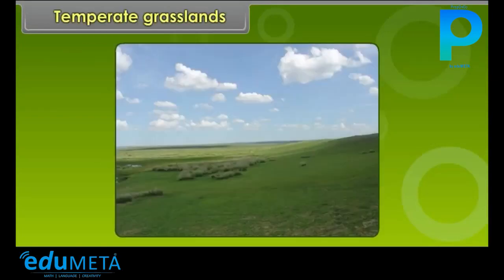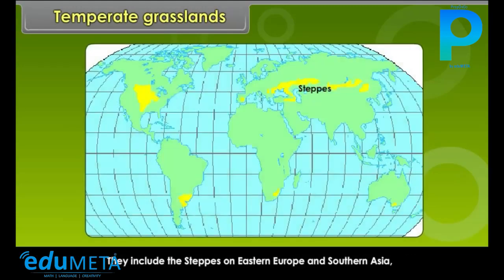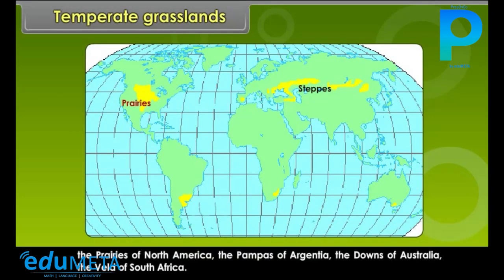The Temperate Grasslands are known by different names in different continents. They include the steppes of Eastern Europe and Southern Asia, the Prairies of North America, the Pampas of Argentina, the Downs of Australia, and the Veld of South Africa.